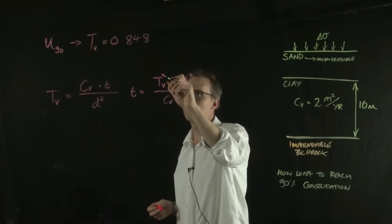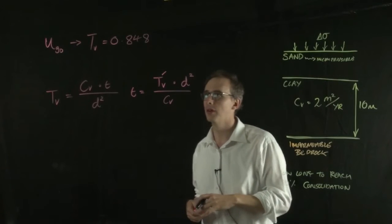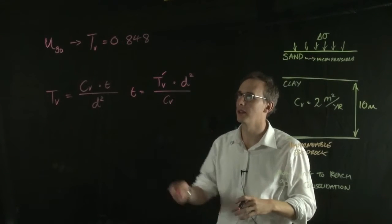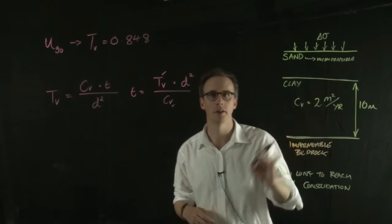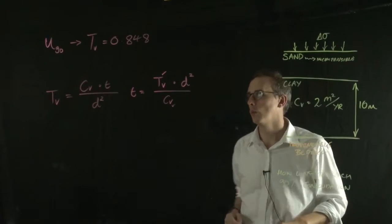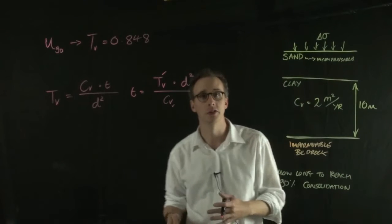So this one is derived. Your TV value is derived from the degree of consolidation. Your CV value is an inherent property of the material. What is the D value here? What's the drainage pathway?